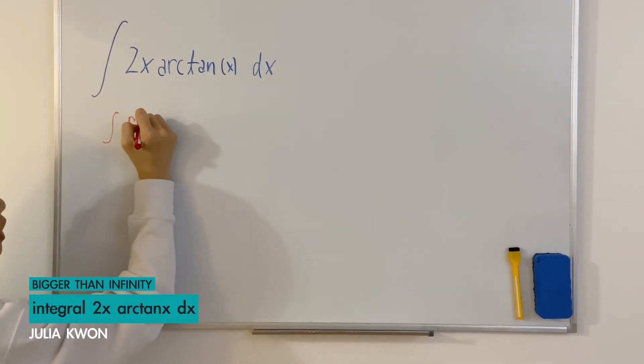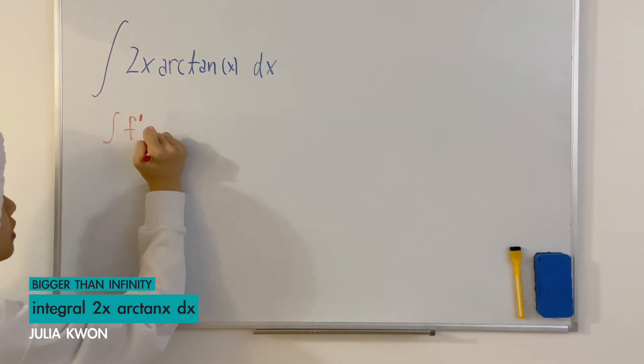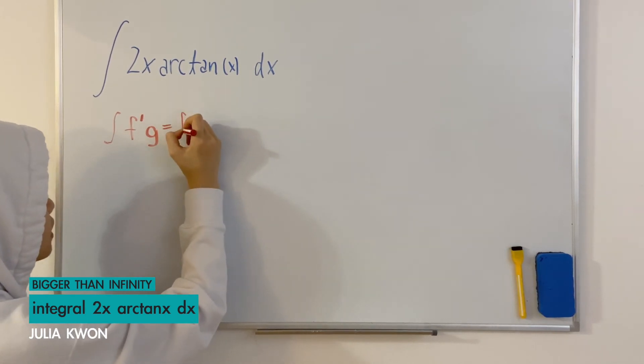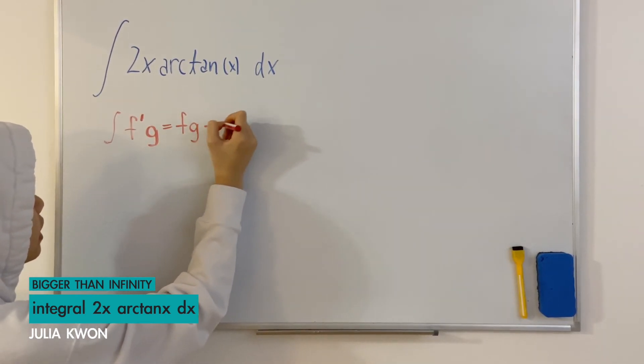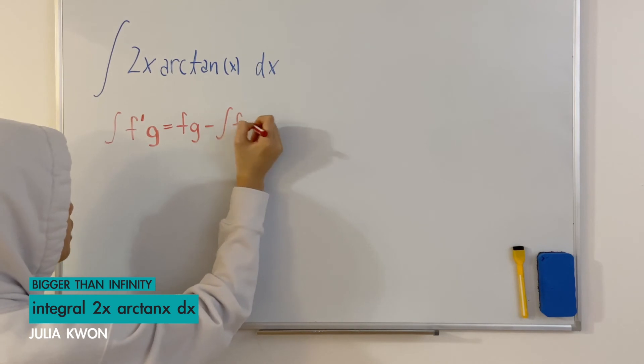f prime times g is equal to f times g minus the integral of f times g prime.